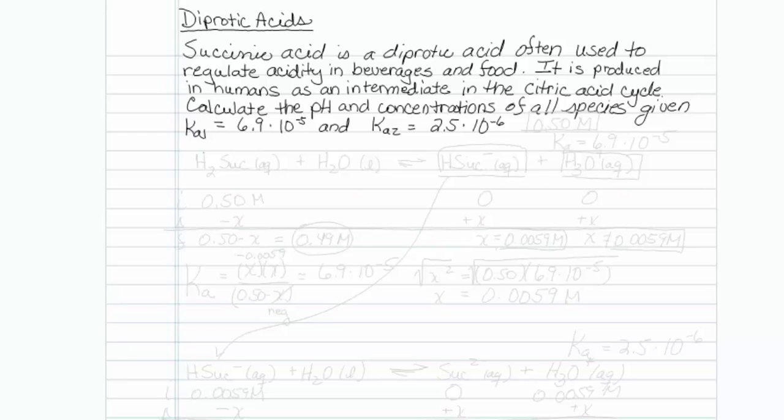This is how to deal with diprotic acids. Succinic acid is a diprotic acid often used to regulate acidity in beverages and food, and it's within our own bodies as part of the citric acid cycle. Calculate the pH and concentrations of all species given Ka1 is 6.9 times 10 to the minus 5, and Ka2 is 2.5 times 10 to the minus 6.